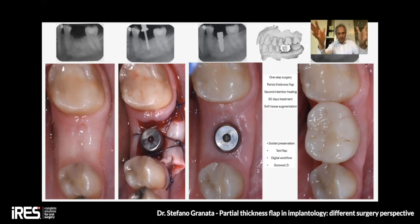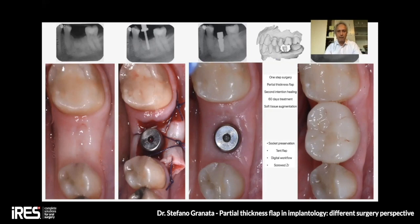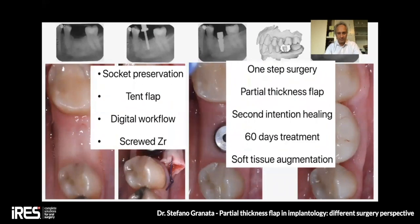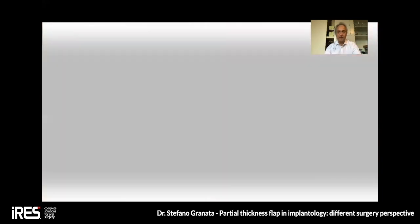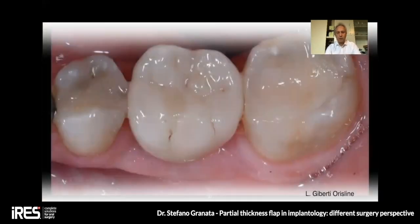All techniques I use need a shaped implant — we do not use cylinder implants. In macro geometry, Evolution Iris implants or similar S-shaped implants are good for these techniques. Here you see the procedure before and after surgery, and healing at 60 days. At 60 days we take the final impression and proceed by digital workflow to get the final prosthesis. This is one-step surgery using partial thickness flap, second intention healing, 60-day treatment, and soft tissue augmentation in the same surgery in which we place the implants.